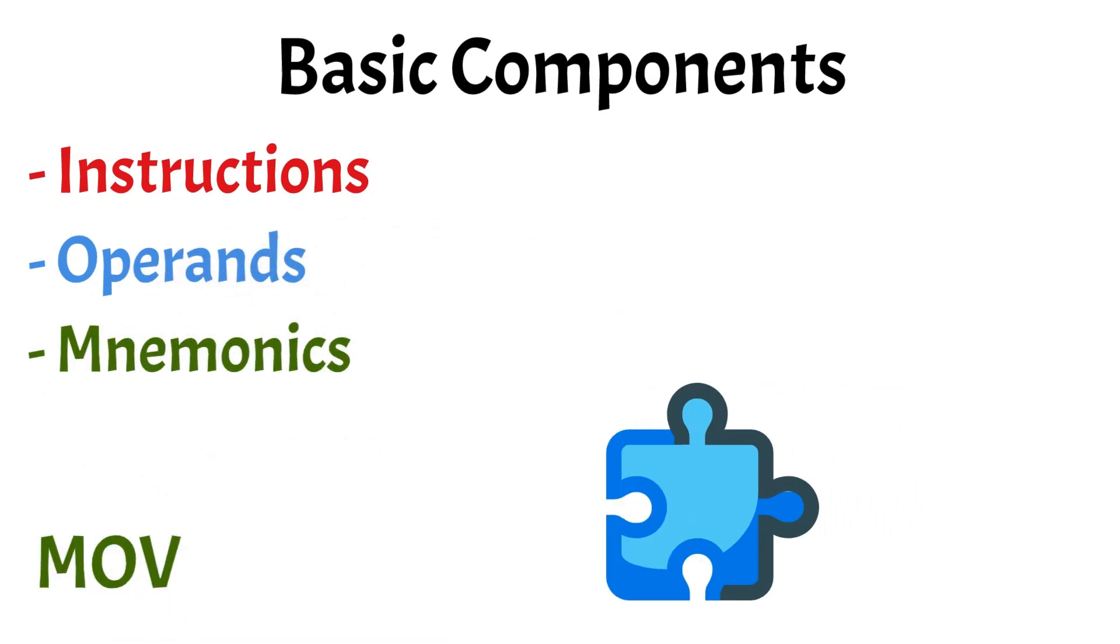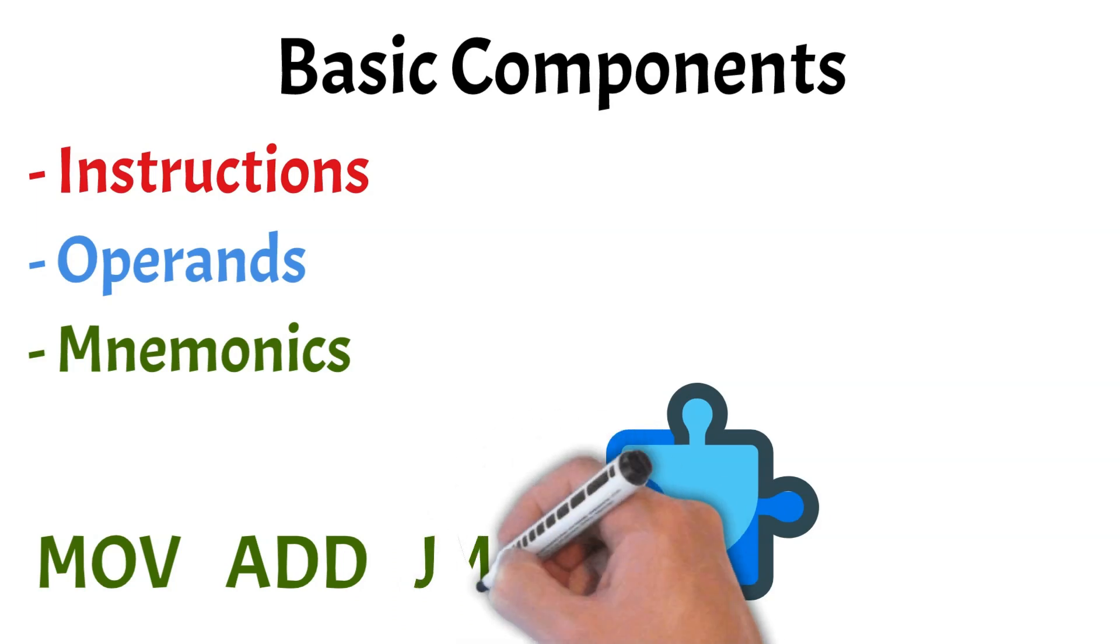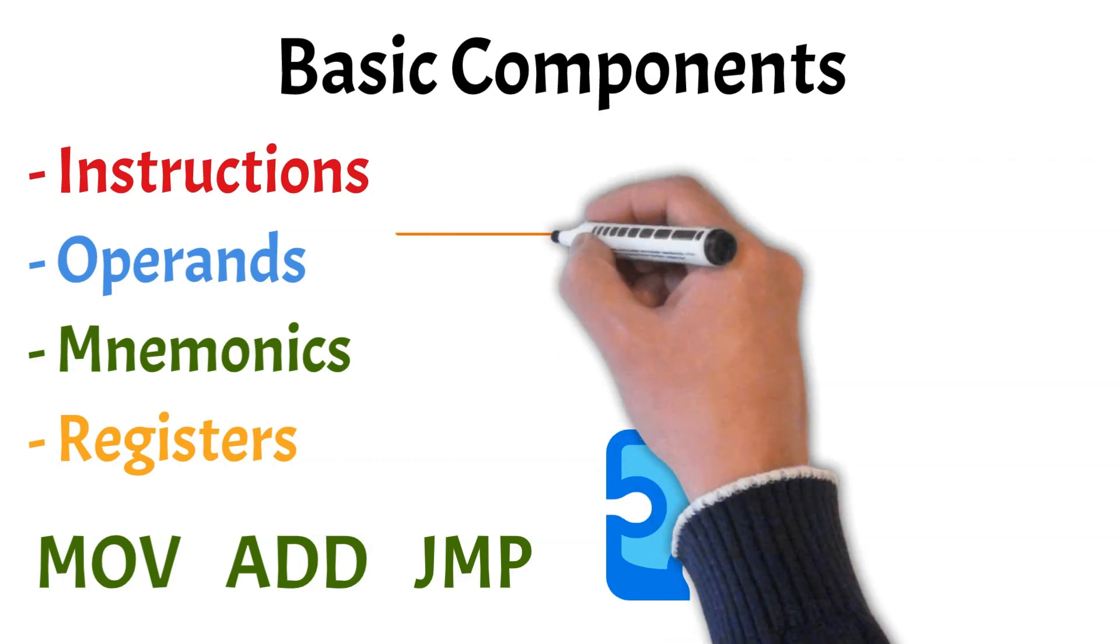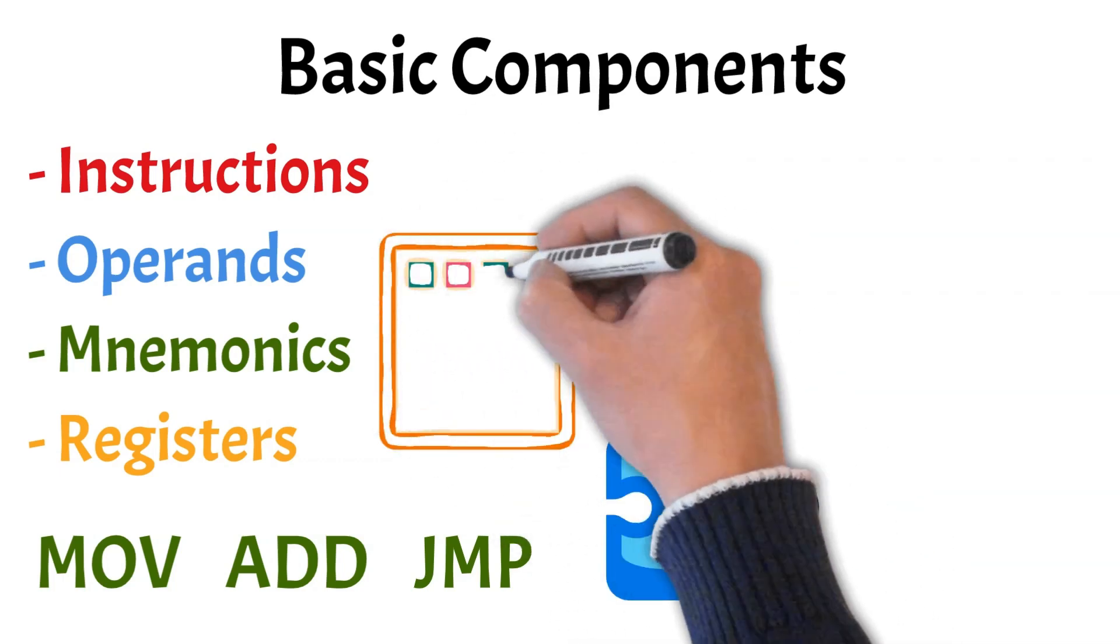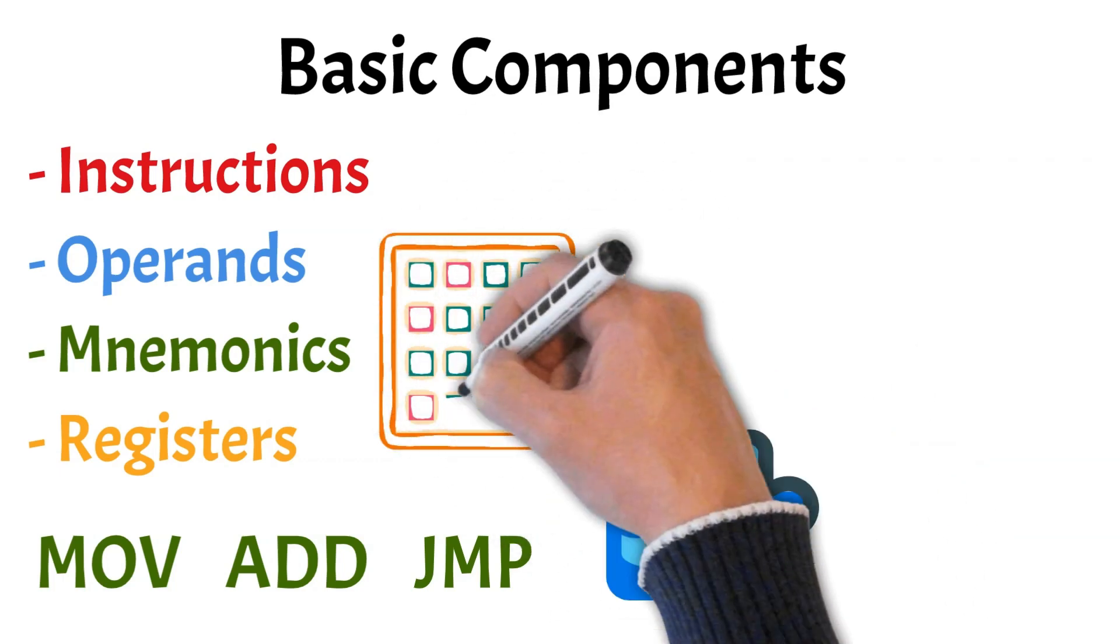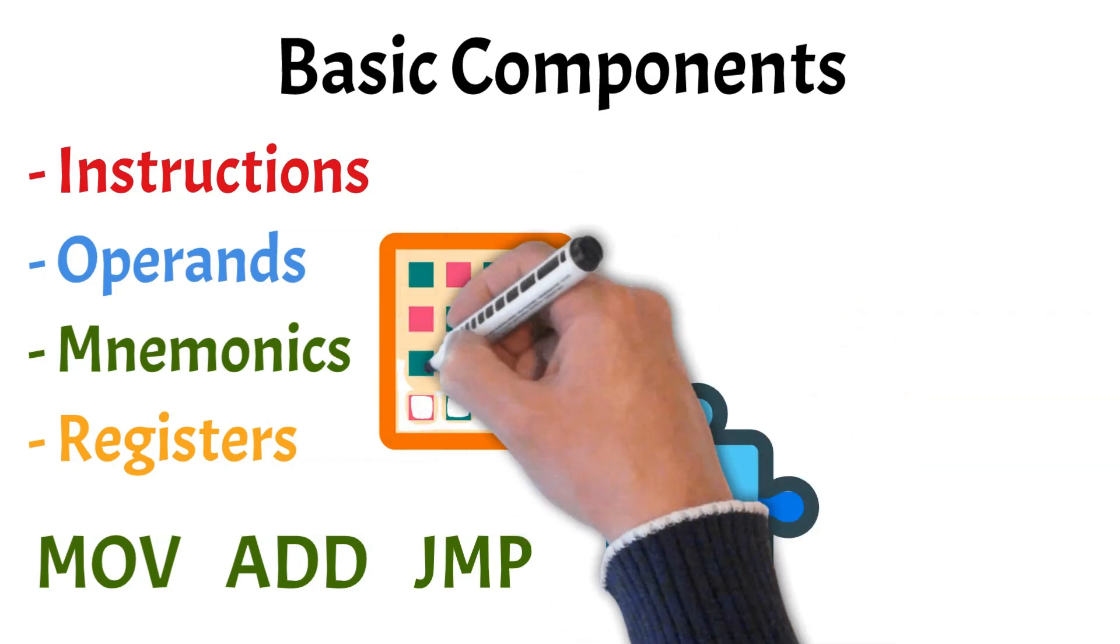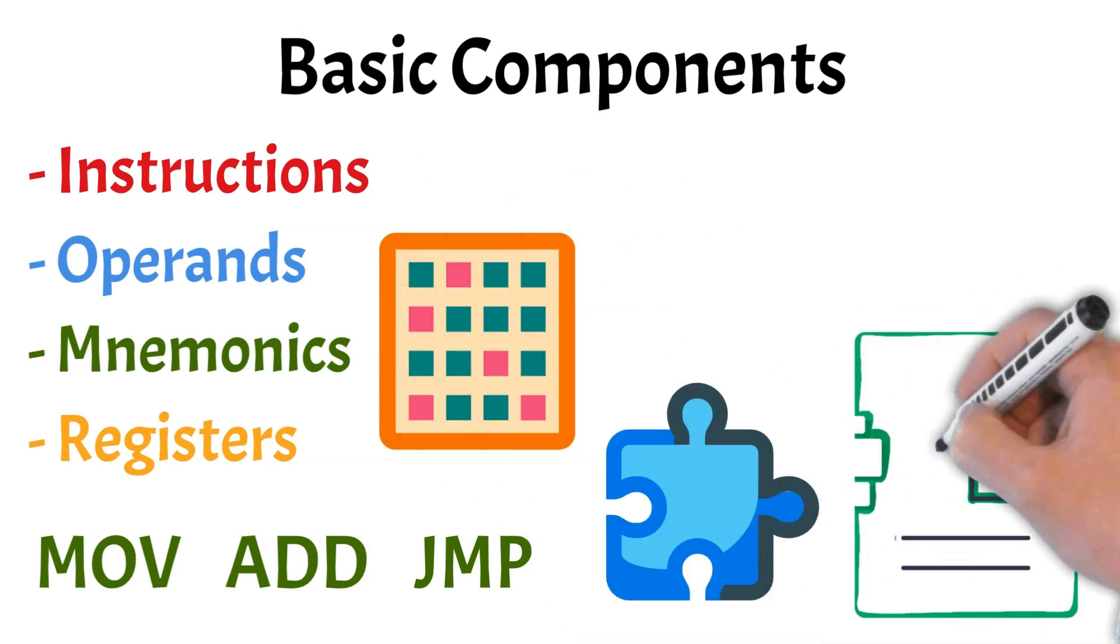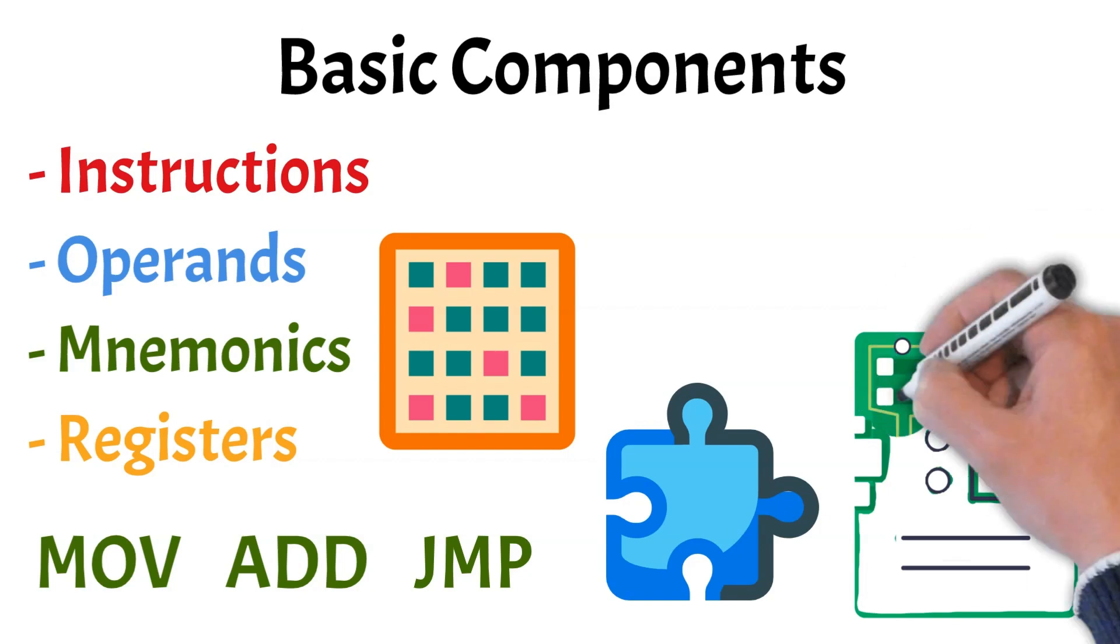Assembly uses mnemonics, human-readable abbreviations like move, add, or jump, to represent these instructions. Each instruction operates on registers, which are small, fast storage areas inside the CPU where data is temporarily held during operations. It's important to note that assembly syntax depends on the architecture of the device you're programming, which means that code written for one type of CPU, like x86, won't work for another, such as ARM.